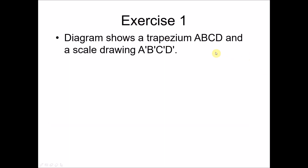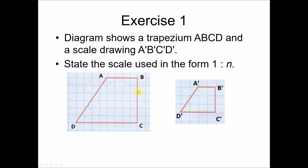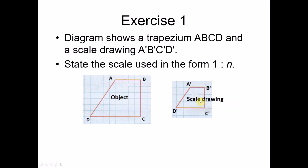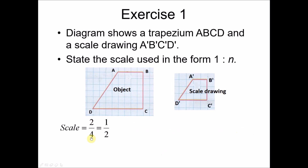Exercise 1: A diagram shows trapezium ABCD as the object and scale drawing A'B'C'D'. State the scale used in the form 1 : n. Using the formula: scale = measurement of scale drawing ÷ measurement of object. Side A'B' is two units and corresponding side AB is four units. So scale = 2 ÷ 4 = ½. Written in ratio form: 1 : 2.